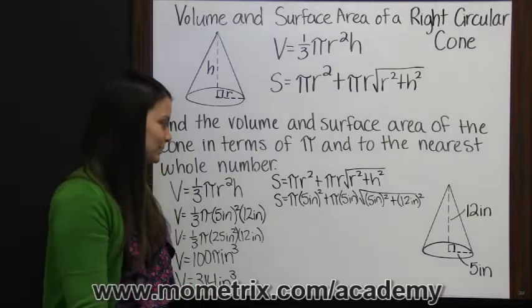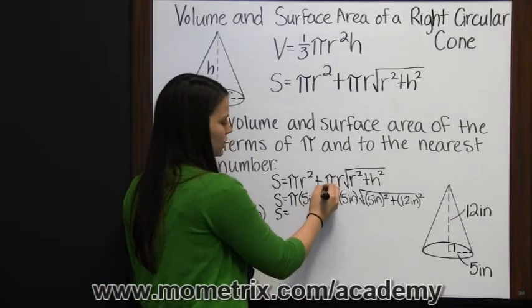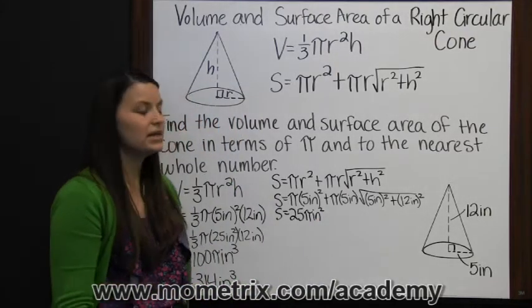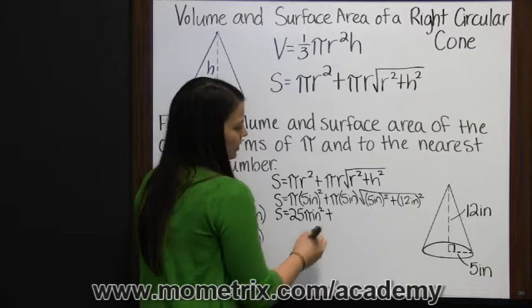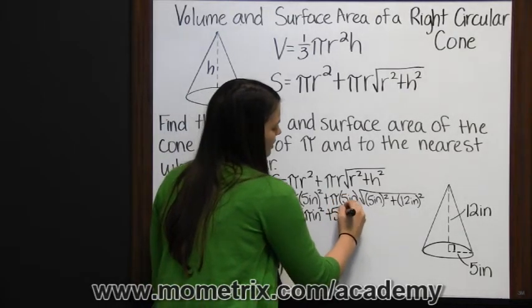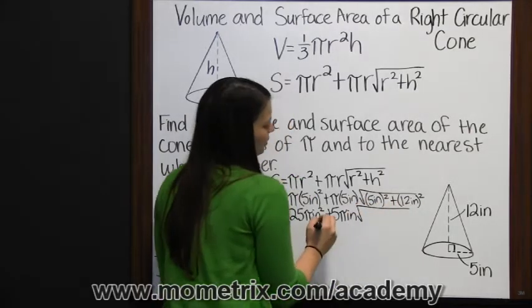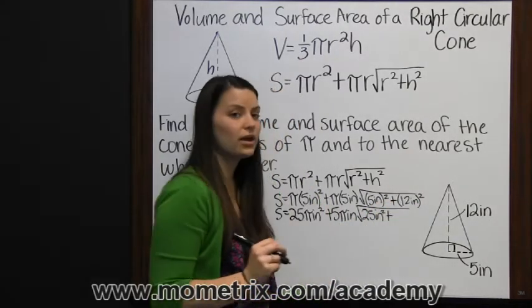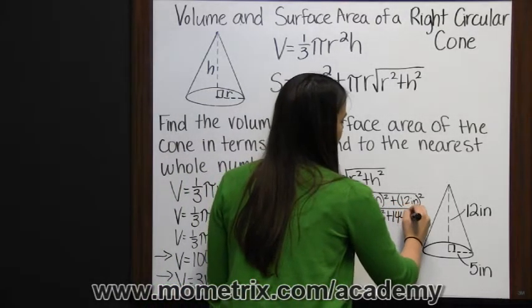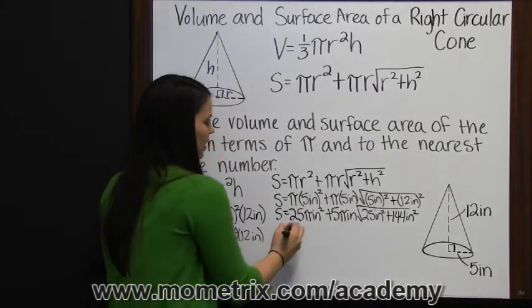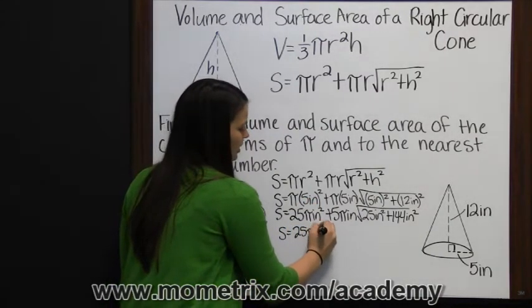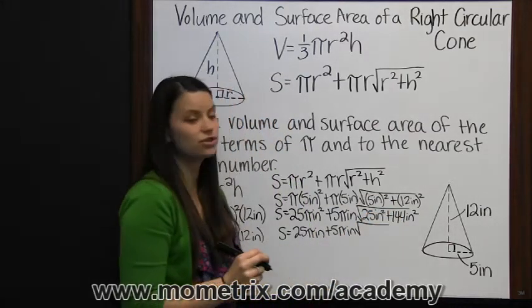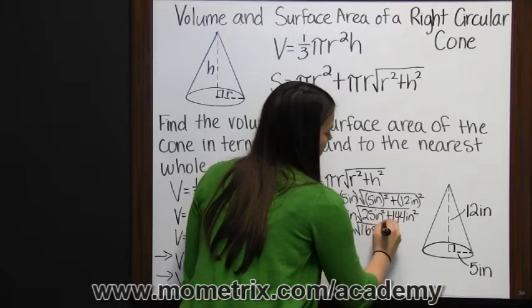Now we need to simplify. Starting with five inches squared: twenty-five inches squared times pi gives twenty-five pi inches squared. Now after our plus sign: five inches times pi is five pi inches. Then we're going to simplify under the radical. Five inches squared is twenty-five inches squared, plus twelve inches squared is one hundred forty-four inches squared. We still need to simplify under the radical, so twenty-five plus one hundred forty-four inches squared is one hundred sixty-nine inches squared.